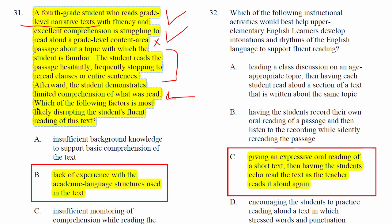If the child is demonstrating very limited comprehension, it's due to the fact that attention was spent on other things rather than trying to understand what was in the text. This child is going back and trying to repair the text. The factor most likely disrupting fluent reading — looking at answer A: insufficient background knowledge. The only reason I can throw that out is because the child is reading a topic they're familiar with.